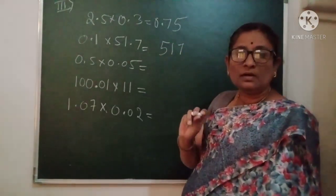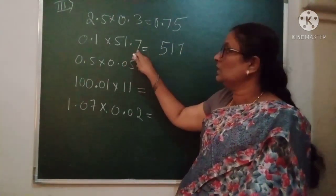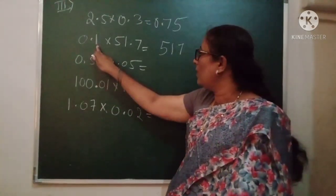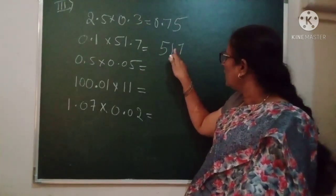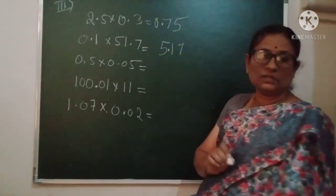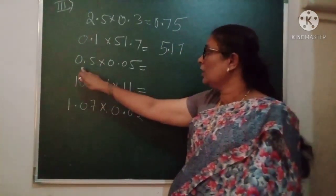Now count the digits after the decimal point. Here we have 1 digit and here also we have 1. That is total 2 digits. So I am keeping it 1 and 2 after this way.